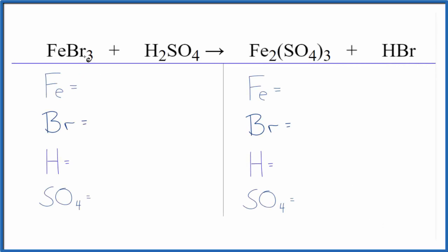In this equation we have FeBr3 plus H2SO4—this is iron(3) bromide plus sulfuric acid. The first thing we need to do when we balance equations is count the atoms up on each side. We have one iron atom.